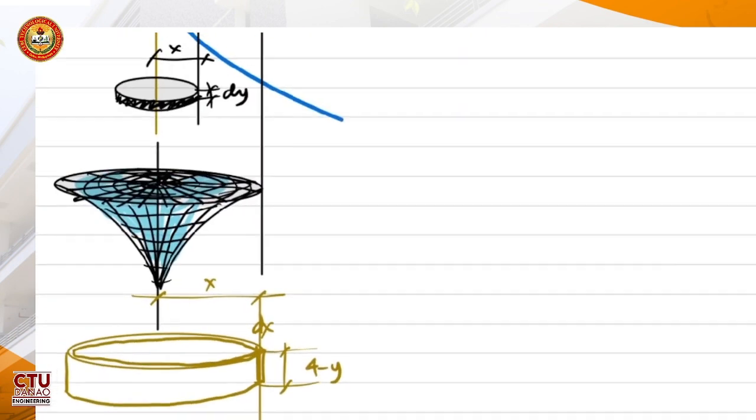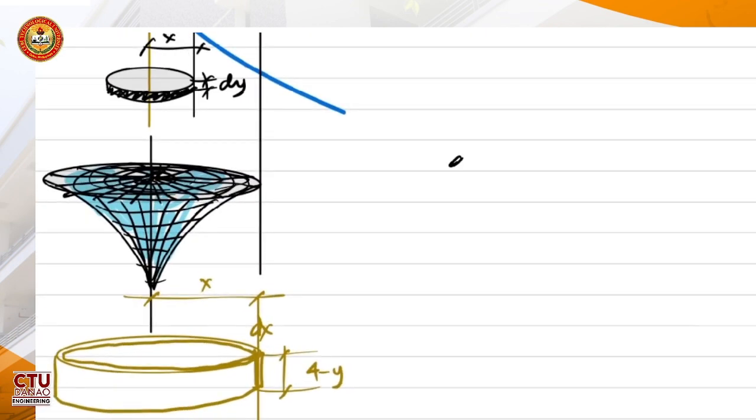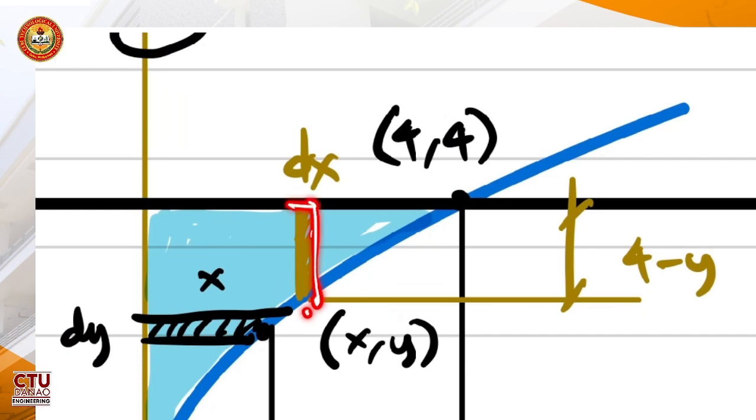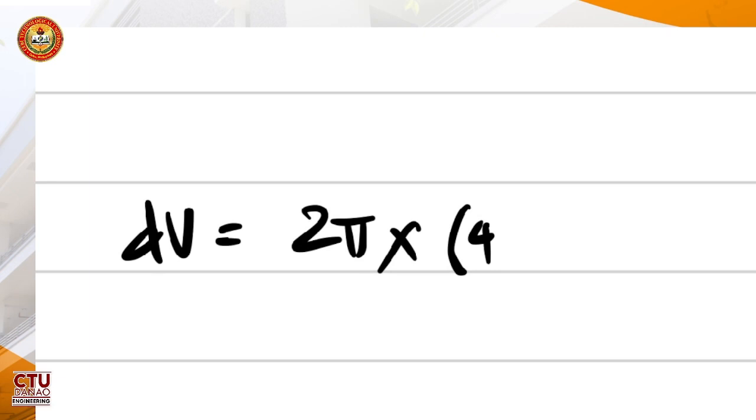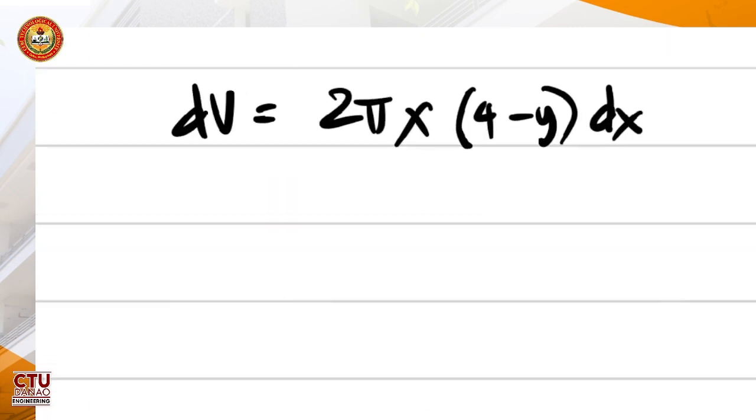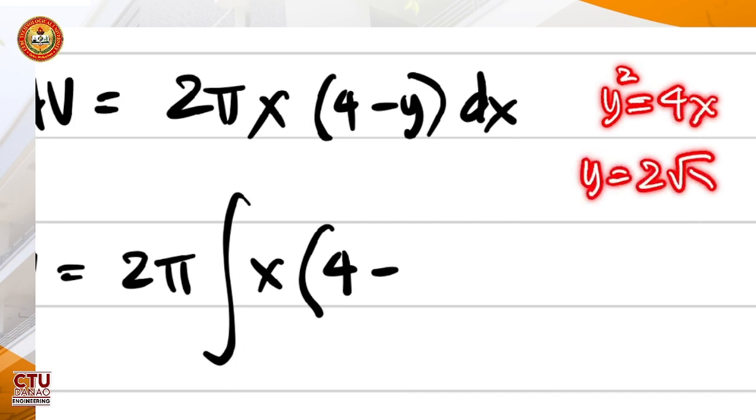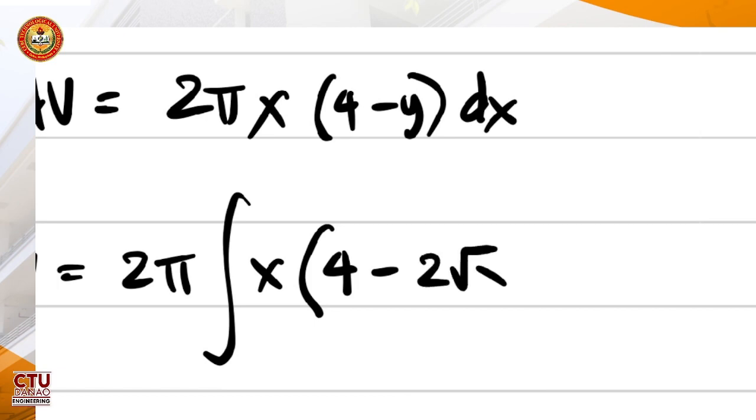From our previous discussion, we said that the differential volume is just equal to the differential area multiplied by its rotation. So the rotation is the circumference of the shell. The circumference is just 2 pi times the radius, which is x, multiplied by the differential area. The differential area is 4 minus y times dx. So therefore, the volume is 2 pi times the integral of x times 4 minus y.